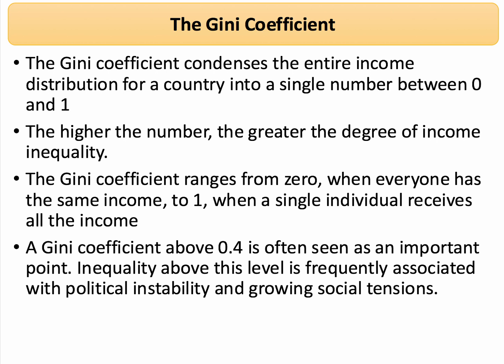A Gini coefficient of 0 means there's no inequality — perfect equality — where every member of a population has exactly the same income. At the other extreme, a value of 1 (or 100) indicates that just one person has all the income and nobody else has anything. The rule of thumb is that a Gini coefficient above 0.4 — not a perfect measure — is seen as quite important, particularly in countries where inequality is reaching politically and socially difficult levels.